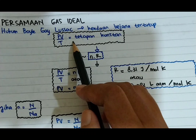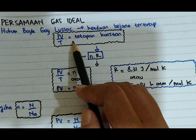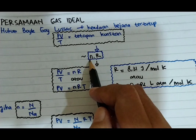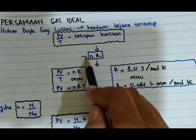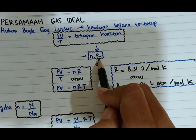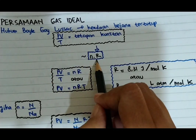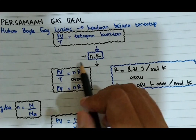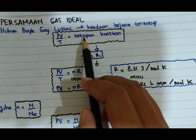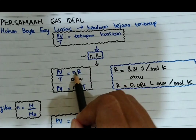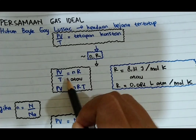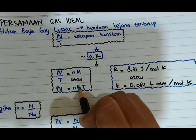Para ahli kimia menyatakan bahwa tetapan konstan ini setara dengan N kali R, di mana N merupakan mol dan R merupakan tetapan umum dari gas ideal. Jadi dari sini kita bisa turunkan ke rumus berikutnya: PV/T sama dengan NR, kemudian dari sini bisa kita kalikan silang menjadi PV sama dengan NRT.